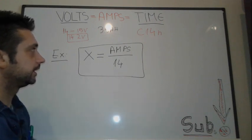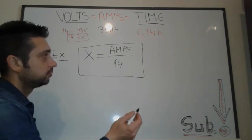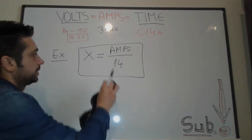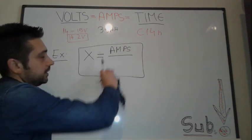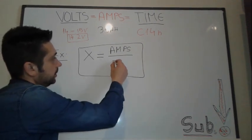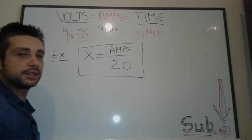14 hours is a plenty safe feature for charging a lead acid battery, but if you want to go more safer than this, you just can replace this one with 20 as you saw in the previous example. That's going to be your formula for calculating each and every 12 volt battery.